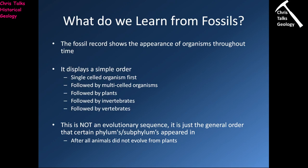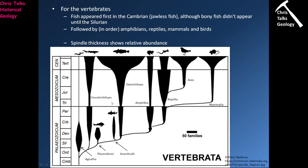What do we actually learn from fossils? The fossil record shows the appearance of organisms throughout time and it displays a relatively simple order: single-celled organisms first, followed by multi-celled organisms, followed by plants, invertebrates and vertebrates. To be clear, this is not an evolutionary sequence — it's just a very general order that certain phylums and sub-phylums appear in. After all, animals did not evolve from plants, but it gives you a basic idea of what the order of evolution was.